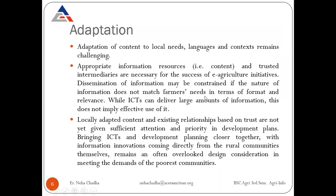Dissemination of information may be constrained if the nature of the information does not match farmers' needs in terms of format and relevance. A farmer may search using one keyword but the information is indexed under a different keyword, so no proper information can be gathered. While ICT can deliver large amounts of information, this does not imply effective use of it.